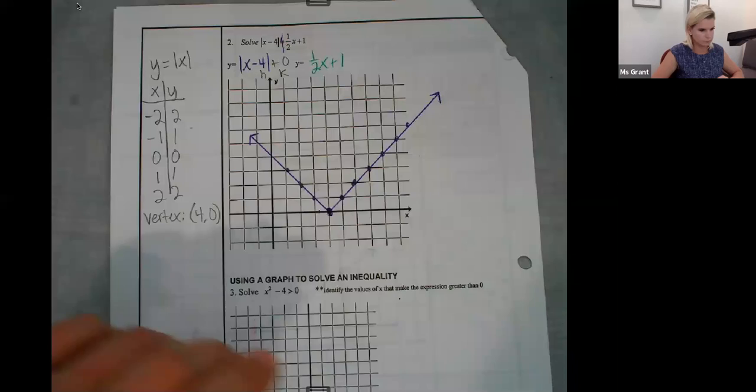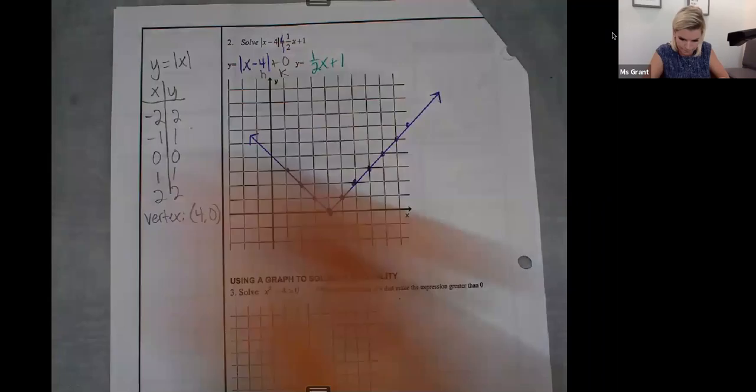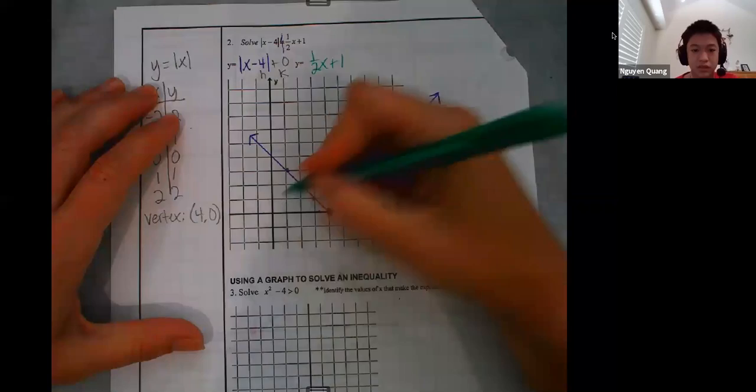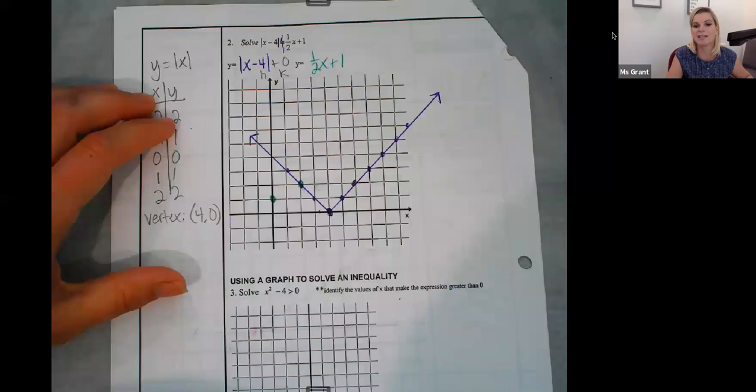All right. So that's purple, absolute value of x minus 4. The green. So the y-intercept is going to be positive 1. Yes. And then you're going to go up 1, over 2. So there's one hitting spot, one point of intersection.